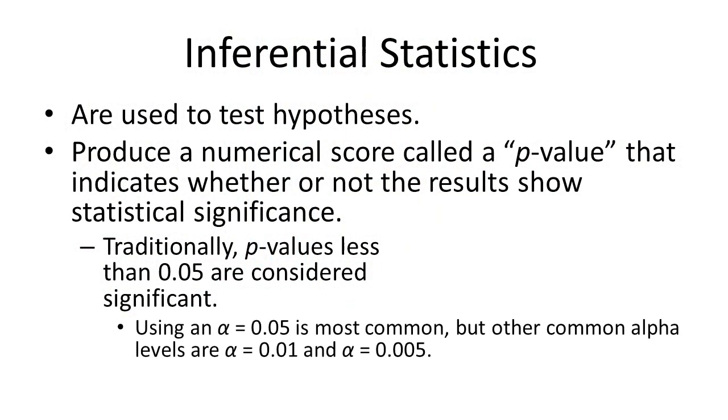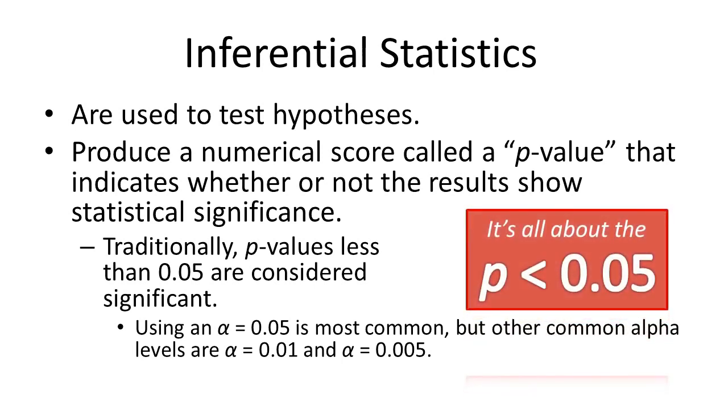Now, this whole idea of p less than 0.05 might seem arbitrary and abstract. But the whole idea is we are basically saying that there is a 5% chance our results are wrong. It's a convention — an arbitrary decision that we are going to only accept a 5% chance. You could say you're only willing to accept a 1% chance, in which case you should look for a p-value less than 0.01. Or maybe you're willing to accept a 10% chance, so you'd look for a p-value less than 0.1. But generally, it's all about p-values less than 0.05.